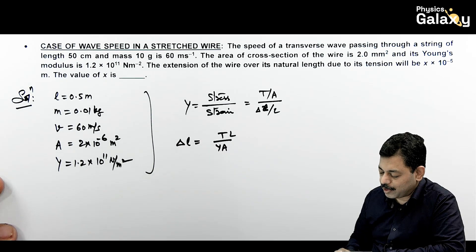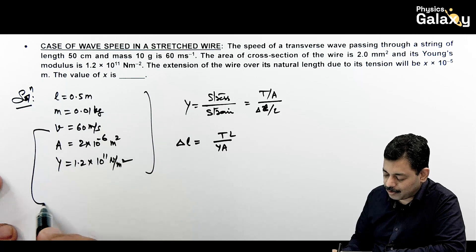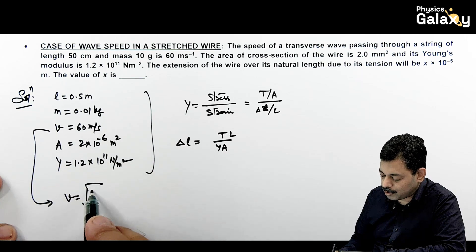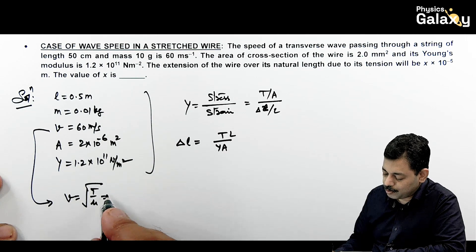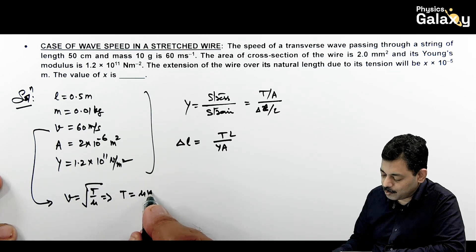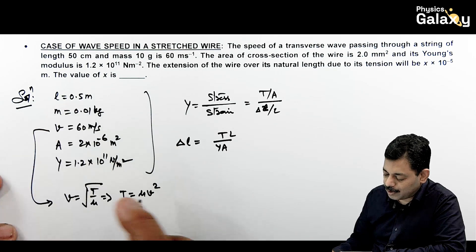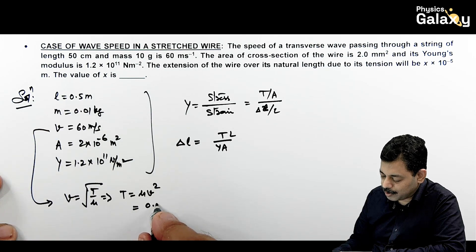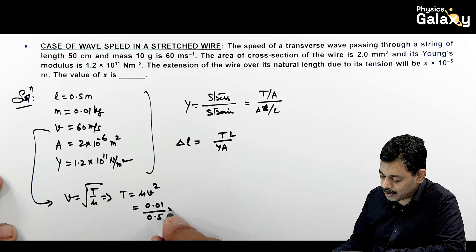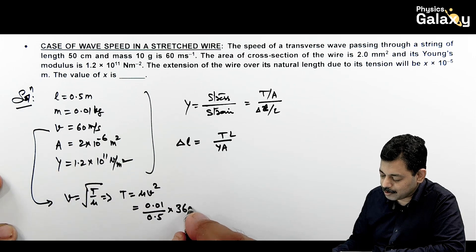Tension now calculate karenge because velocity is root of T by mu. So from this, tension is mu v square. Mass per unit length you can write as m by l, which is 0.01 by 0.5 multiplied by v square is 3600. So 72 newton tension hai.